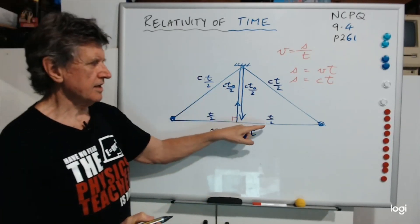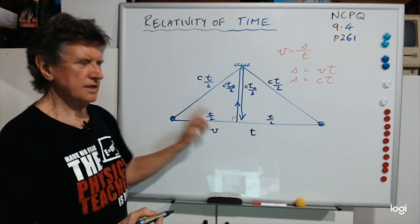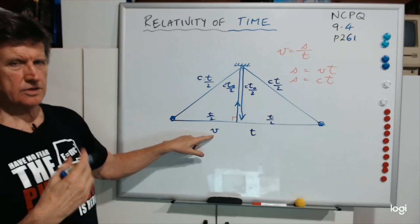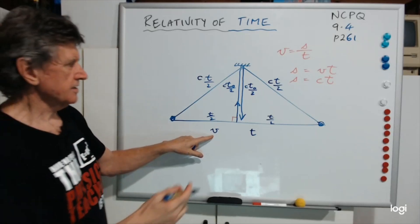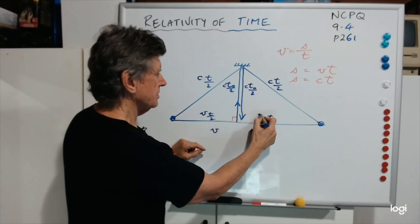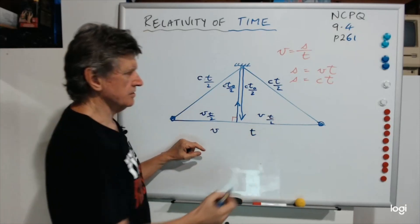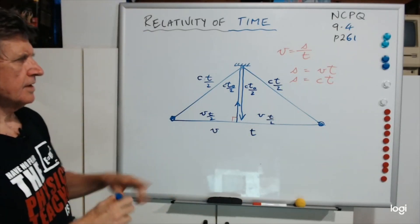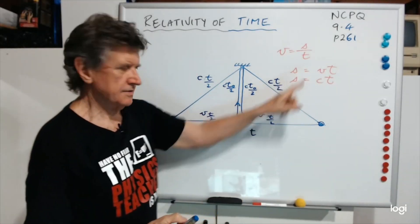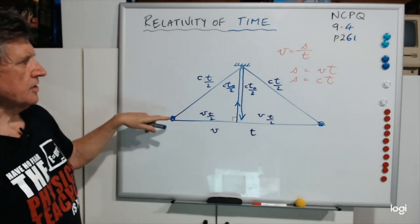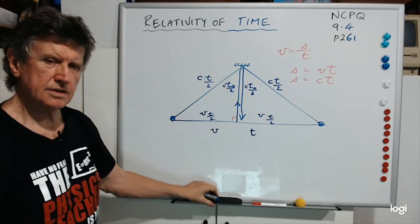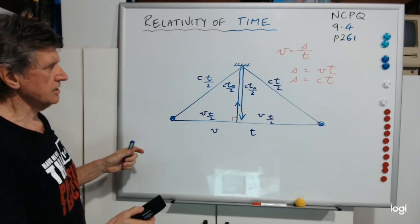This bottom side, though — the distance is based on the speed of the train, which is V, not the speed of light. So this is going to be VT/2 and VT/2, because VT gives you the distance. So there's my little triangle.